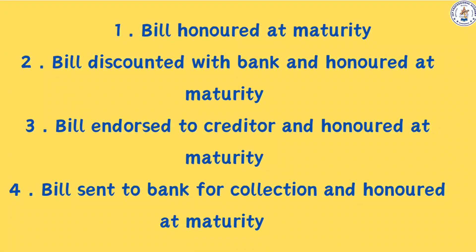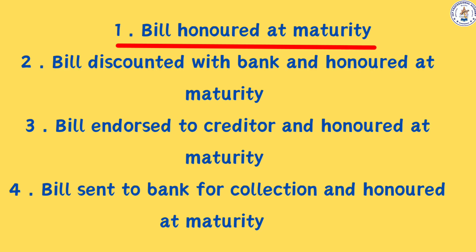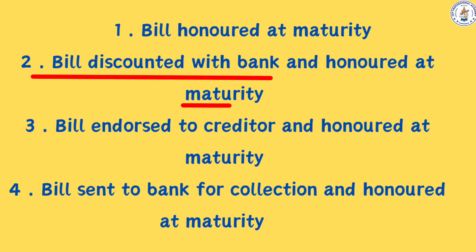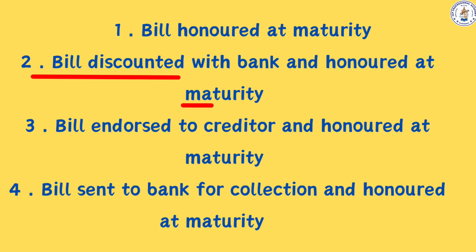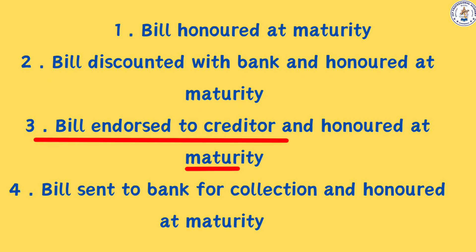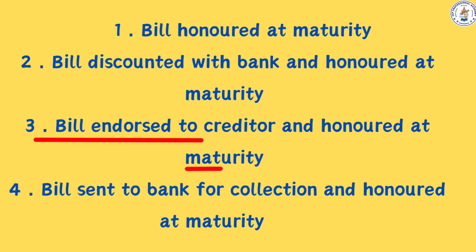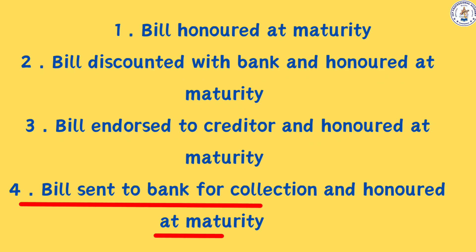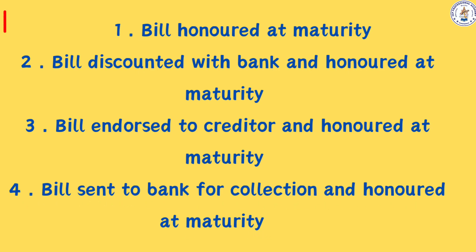This is the 4th illustration. To summarize: the first model is the bill honored at maturity; the second model is the bill discounted with a bank; the third model is endorsement — bill endorsed to a creditor; the fourth model is bills sent to bank for collection. This is the 4th scenario covered.